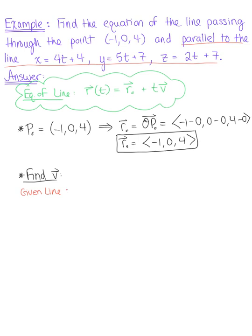So the given line is in its parametric form. The given line is defined as x(t) = 4t + 4, y(t) = 5t + 7, and z(t) = 2t + 7. So these are the parametric equations of the given line that we want our new line to be parallel to.